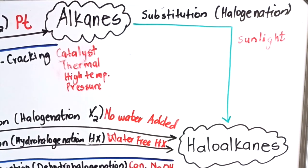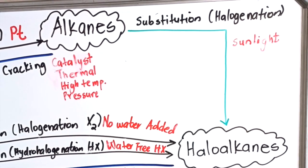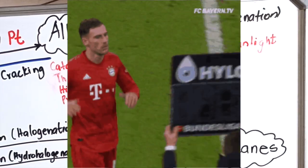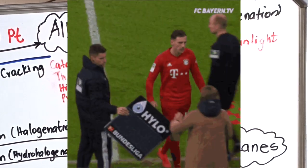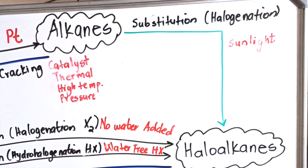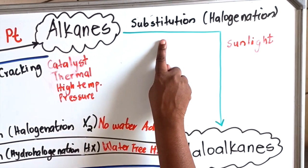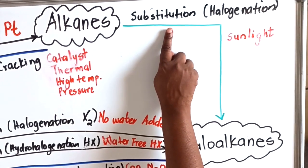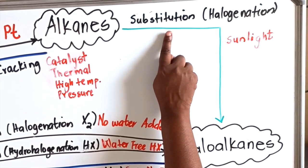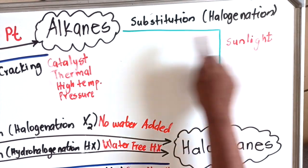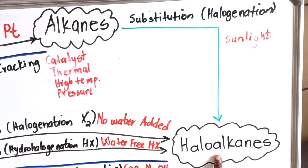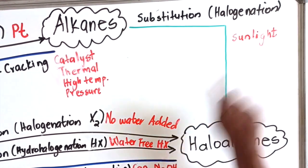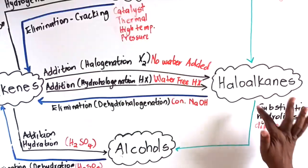The third kind of reaction that organic compounds go through is substitution — like a substitution in soccer, where one player goes out and another takes their place. With substitution, an atom moves out and something else moves in. If what moves in is a halogen, the reaction is halogenation: an alkane forms a haloalkane, and the reaction condition is sunlight or UV light.